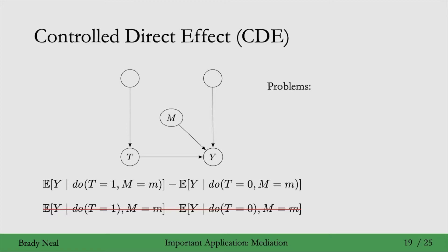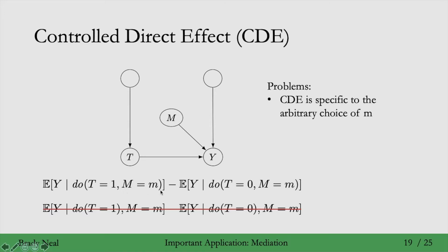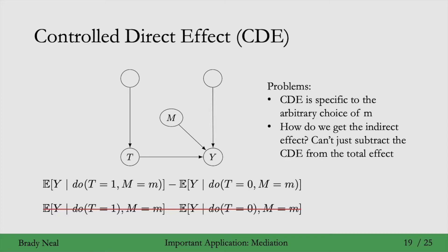But there are some problems with the controlled direct effect. The first is that the CDE is specific to the arbitrary choice of M — for any different value of M, we can get a different controlled direct effect. Ideally, we would have just one direct effect value. The second major problem is how do we get the indirect effect? You might think you could subtract the controlled direct effect from the total effect, but subtracting the CDE from the total effect doesn't necessarily give you the indirect effect.